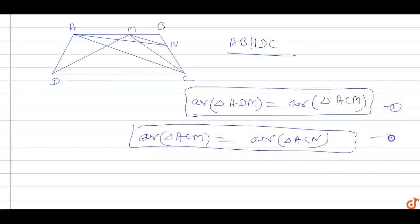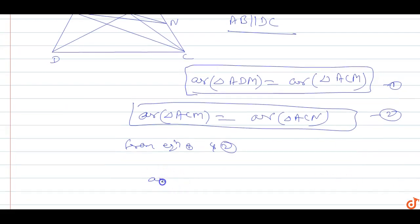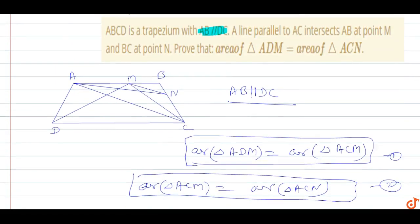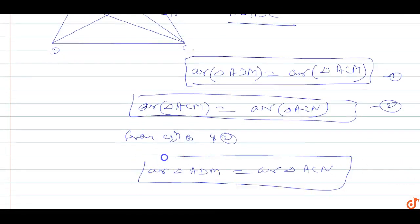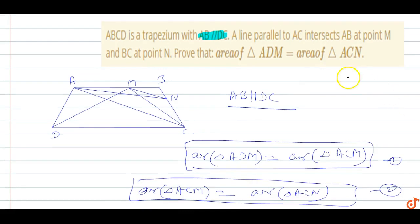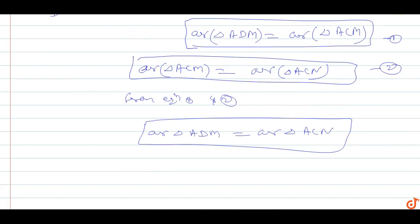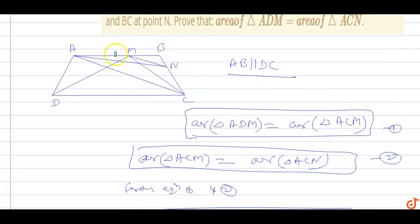From equation one and equation two, we can conclude that the area of triangle ADM is equal to the area of triangle ACN. Here M and N are points on AB and BC respectively. This completes the proof that both areas are equal.